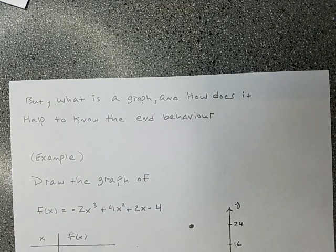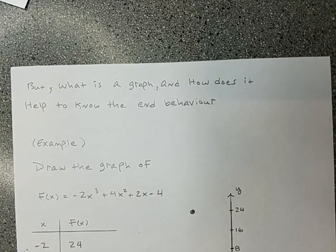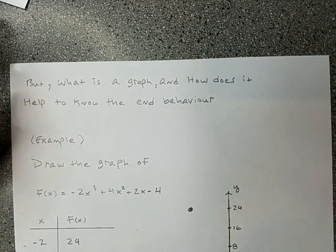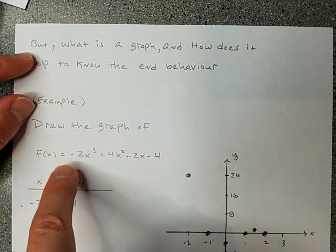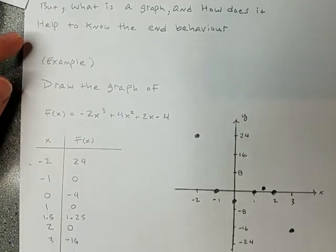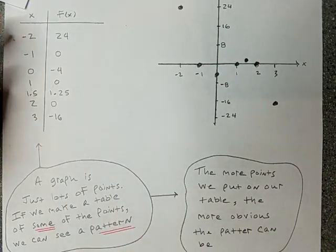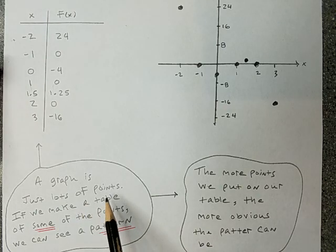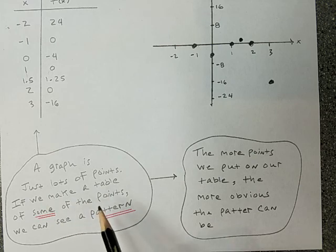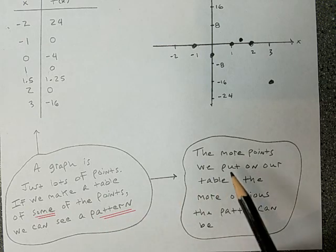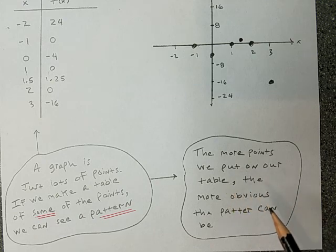Let's look at an example. In math, science, and engineering we like graphs because they summarize a lot of information in one place. Think about what a graph is in general. A graph is just lots of points. If I made a table of x's and y's, those would be points. When we plot enough points, a visual pattern becomes obvious — the more points we put on the picture, the more obvious the pattern can be.